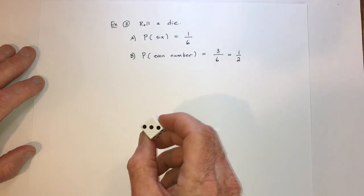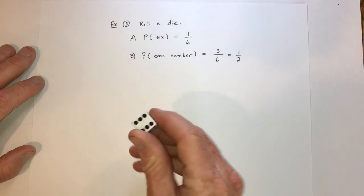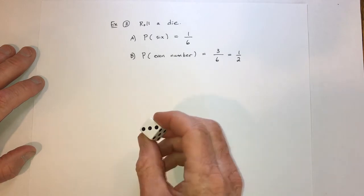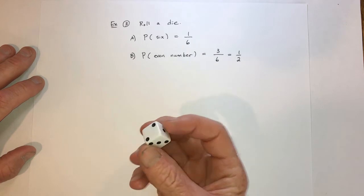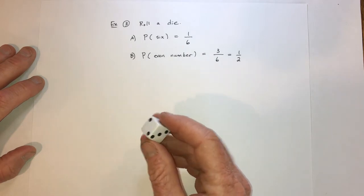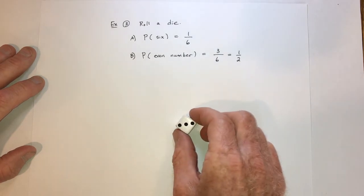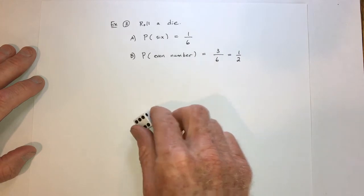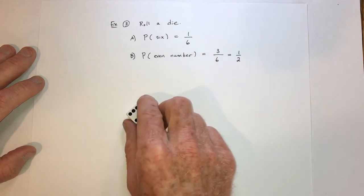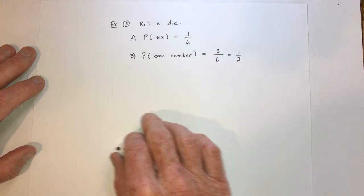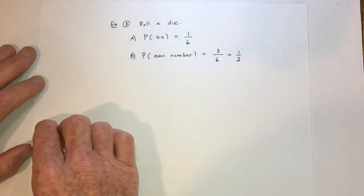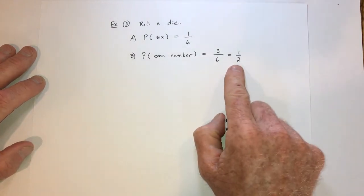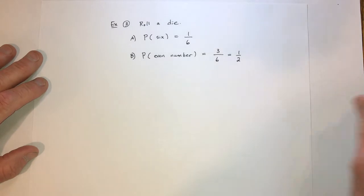Of course in real life it's not always going to go perfectly even, odd, even, odd. It can go in streaks — odd, odd, odd, then even, even, odd. But in the long run, if you do it thousands and thousands of times, then 50% of the time it'll be even and 50% of the time it'll be odd.